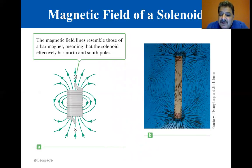When the turns are closely spaced, the field lines are shown in the figure on the left entering at one end of the solenoid and emerging at the other. One end of the solenoid acts as a north pole and the other end acts as a south pole. Compare this solenoid to the figure on the right of a bar magnet. If the length of the solenoid is much greater than its radius, the lines that leave the north end of the solenoid spread out over a wide region before returning to enter the south end.